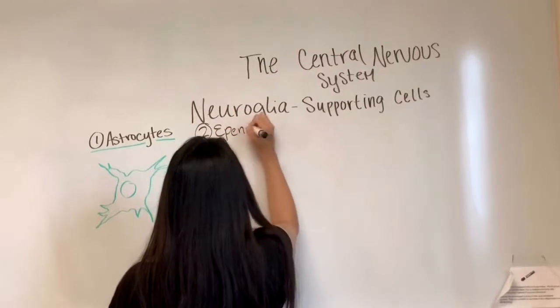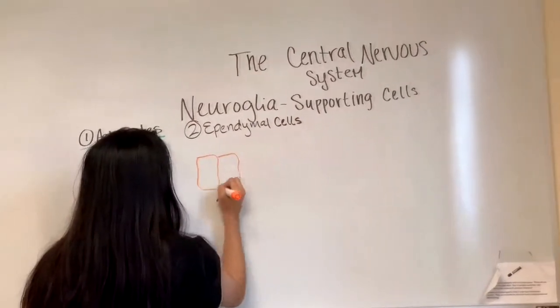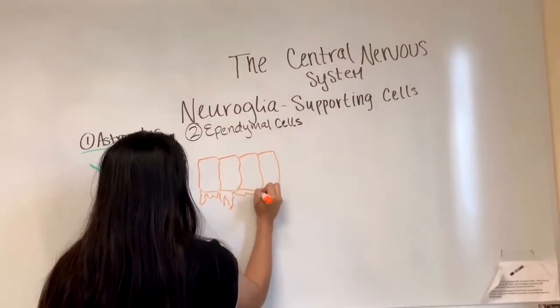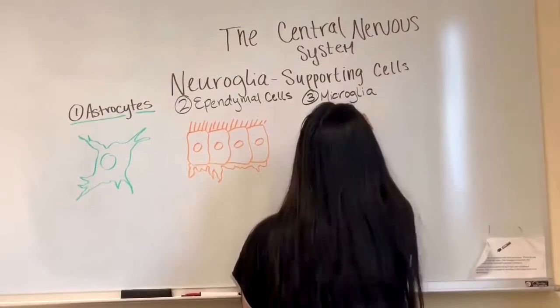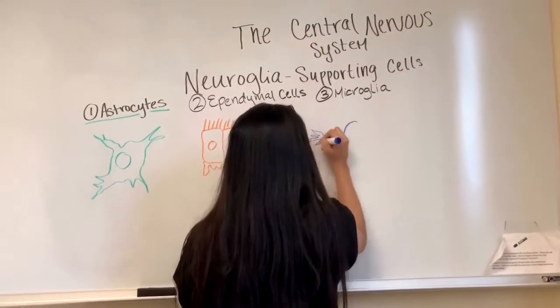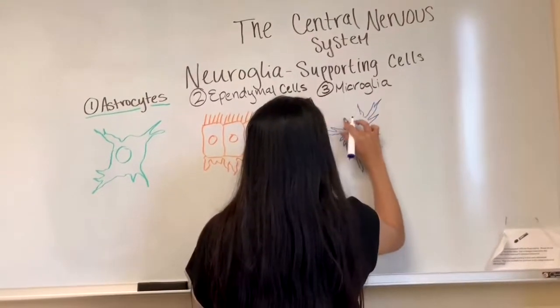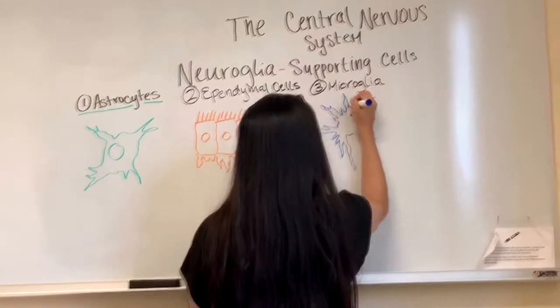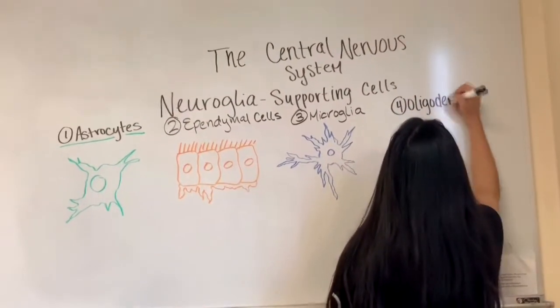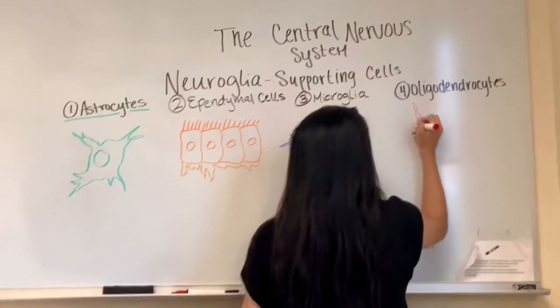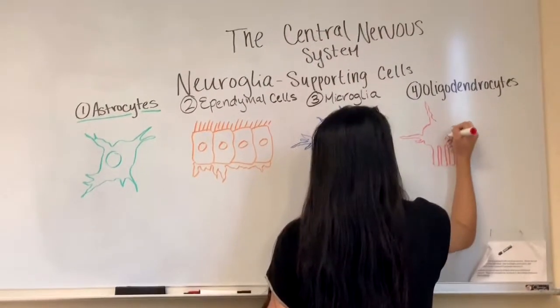The third one is ependymal cells, where they can range from squamous to columnar shape, and sometimes they have cilia. They align the central cavities of the brain and spinal cord where cerebrospinal fluid is filled to help cushion them. The next one is microglia cells. They are defense cells that monitor neurons health and when they see an injury. They have fewer processes than others and they form a myelin layer by wrapping the processes around the nerve fibers.